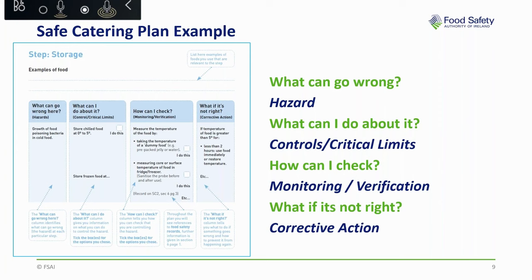Food safety management systems are usually associated with terminology that can be difficult to understand. The pack addresses this using plain language, asking you to think about: What can go wrong? What can I do about it? How can I check? What if it's not right? After each step there is additional food safety advice that should be read and followed. Some of the information in the steps and advice section has been changed in the 2020 version.